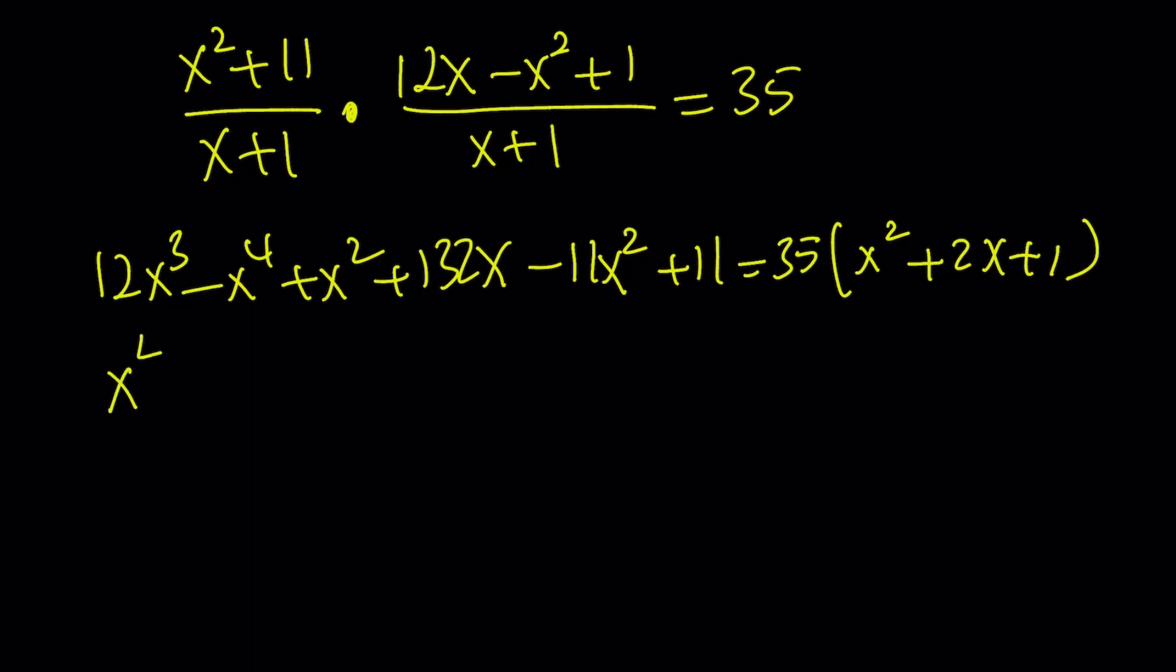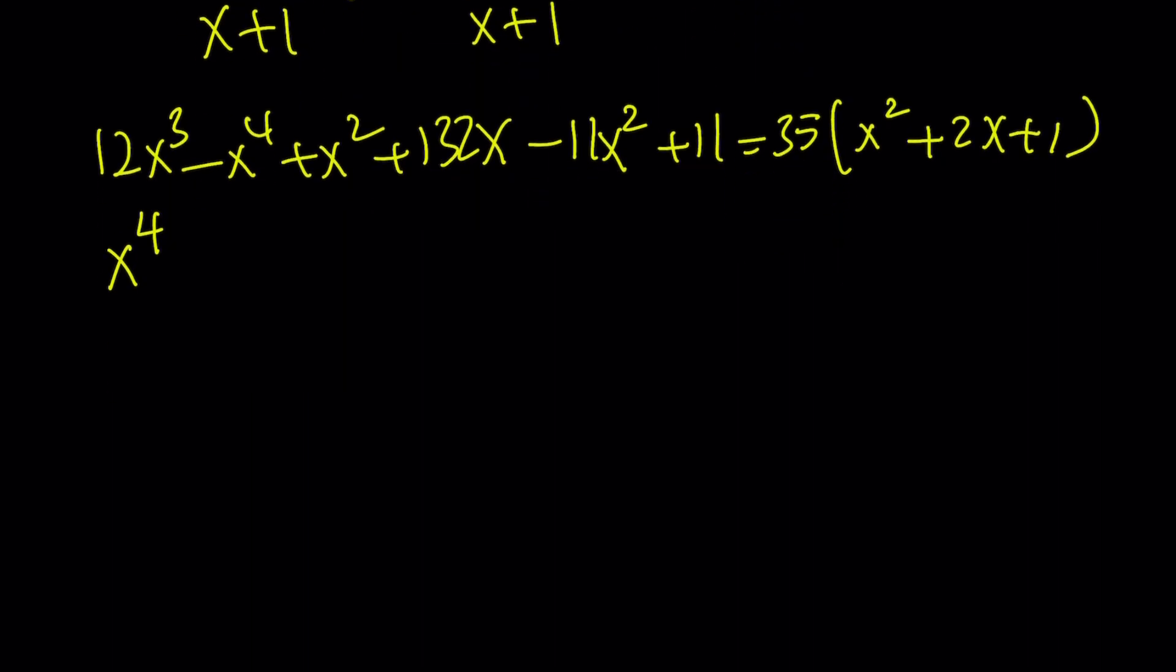you'll get the following quartic equation: x⁴ - 12x³ + 45x² - 62x + 24 = 0.